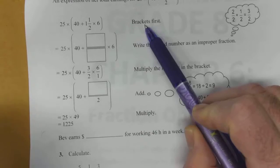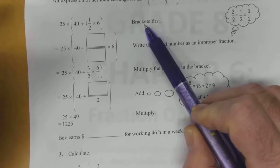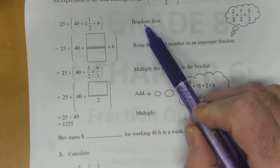Brackets, then exponents, which we don't deal with in grade 8. Then multiplying and dividing comes next in order from left to right. And then adding and subtracting is the third process, left to right.